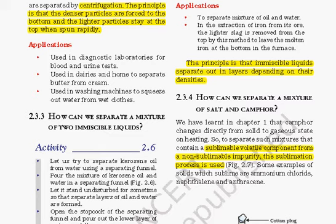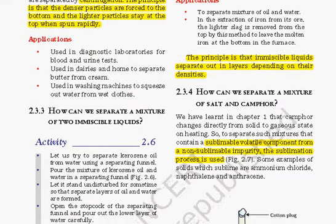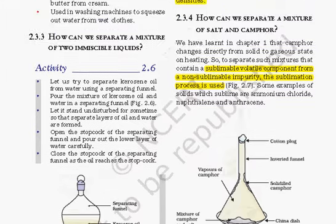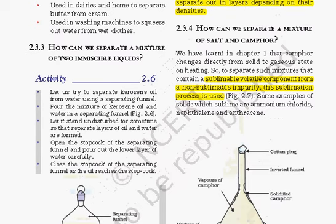To separate a mixture of two immiscible liquids — if they have different colors or properties, layers form. This can be done using a separating funnel with a stopcock. For example, with kerosene and water, two different layers are formed. If you open the stopcock until the water level, the water will be separated from the kerosene.